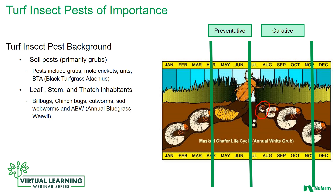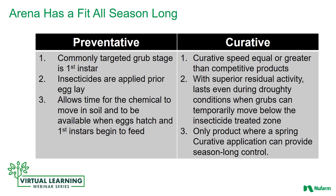The grubs overwinter and then create a pupae, which eventually matures into a beetle, and that cycle continues. The bars on the chart mark the preventive window — that's when you need to have your preventive insecticide treatment down, with the ability for it to get into the soil area before the eggs hatch. After that point, you're at the curative application timing.